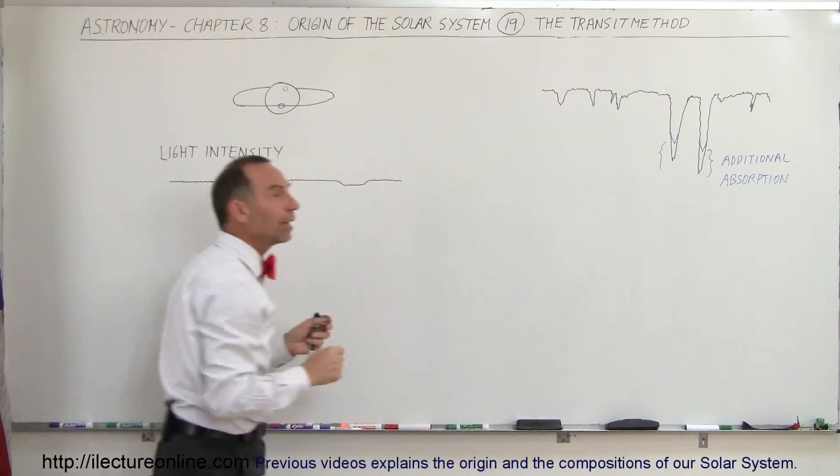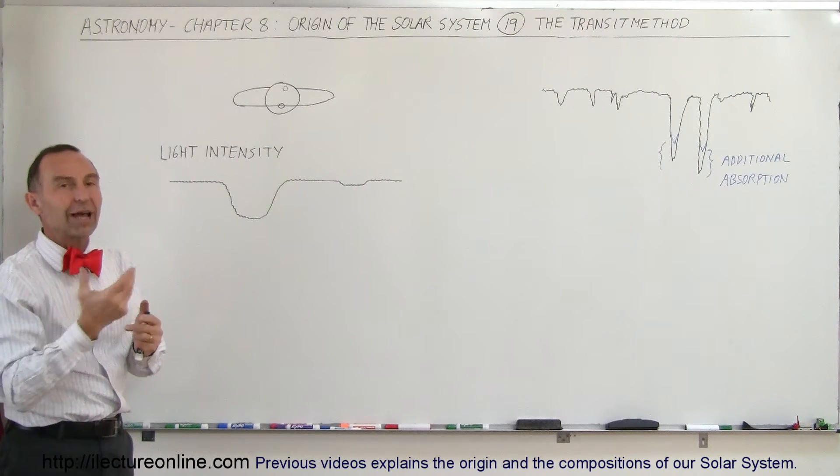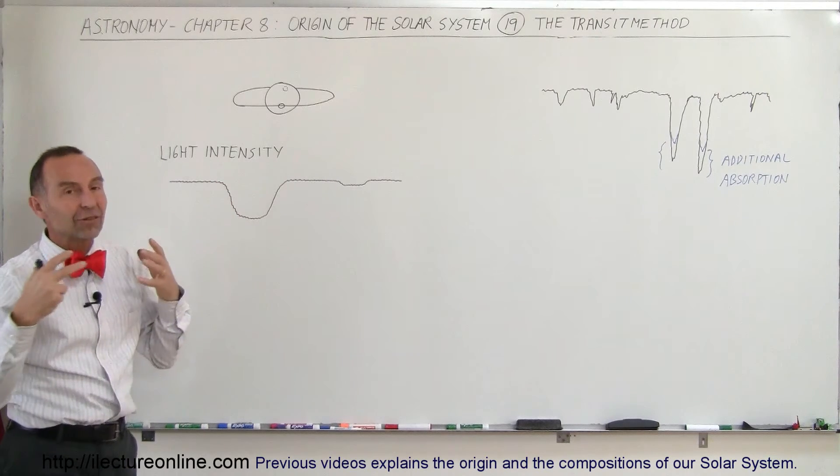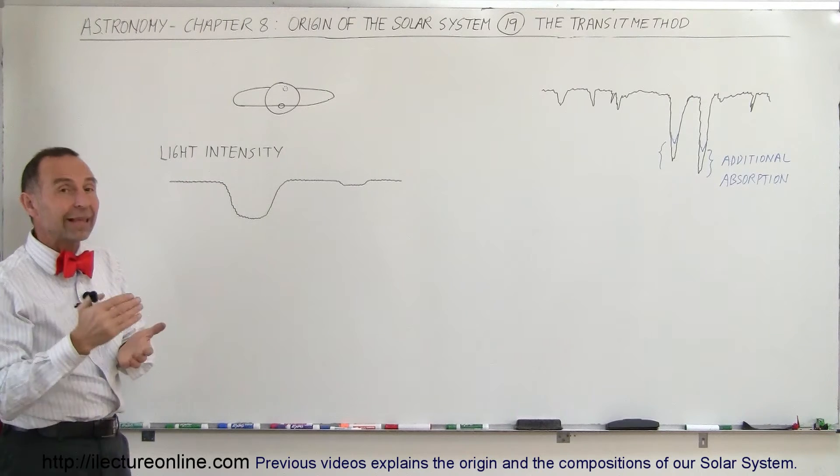When it happens again and again and again, we can figure out what the orbit of that planet is based upon the time duration, the amount of the dimming, and the size of the star. We're able to figure out quite a bit about that planet.